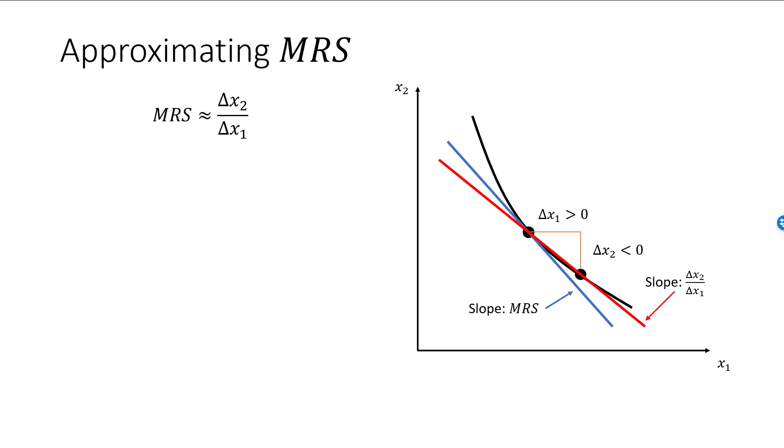If a consumer is willing to give up 2 units of good 1 for one additional unit of good 2, then MRS is minus 0.5. Half a unit of good 2 for one unit of good 1. The reason we call it marginal rate of substitution is due to the fact that MRS is only the rate of substitution at the margin, that is, it's only the rate of substitution for very small changes.